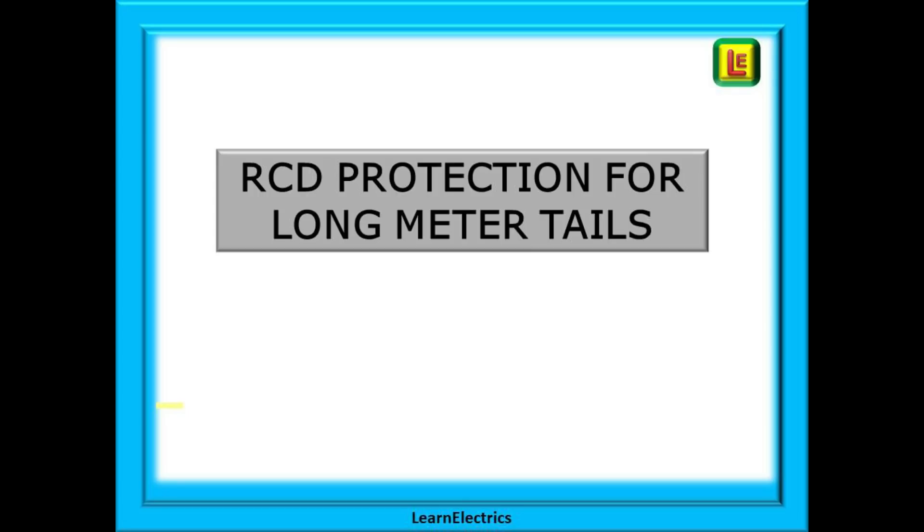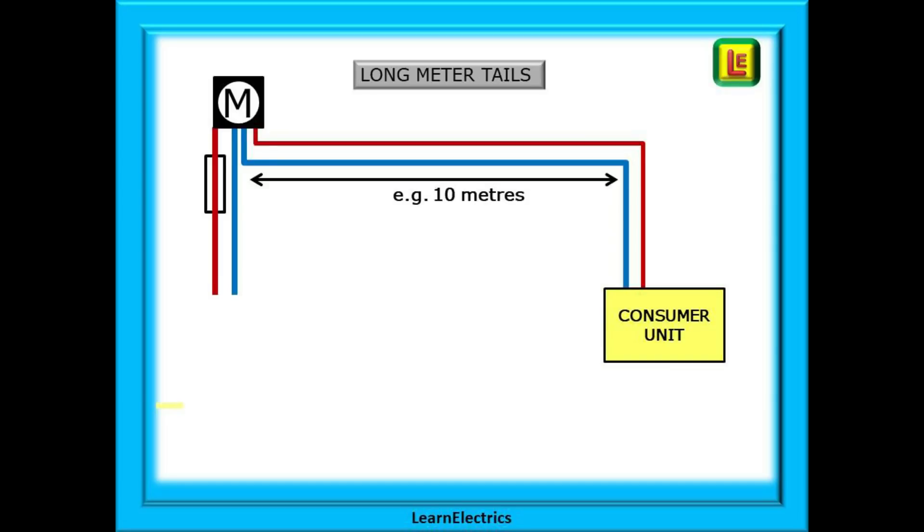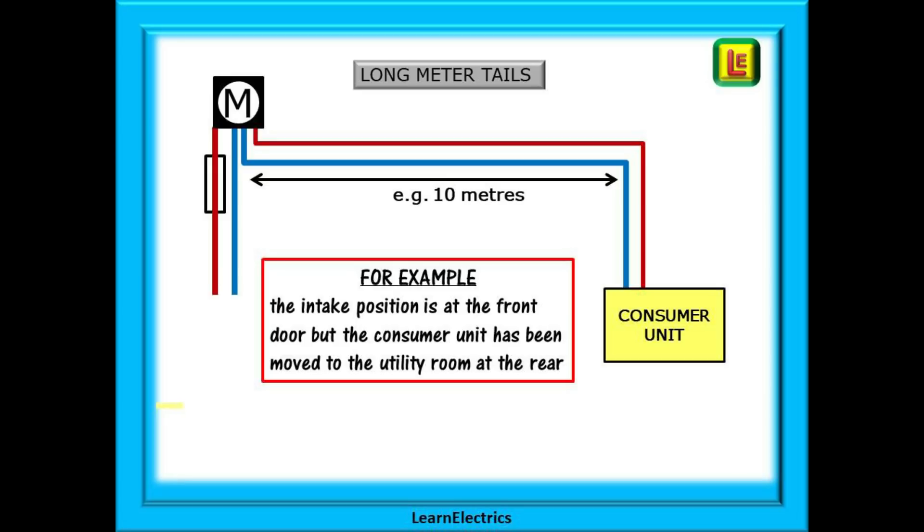And you may also come across properties with TT systems that have excessively long meter tails. How should you protect these? In this example the tails are over 10 meters in length. It could be that the intake position is at the front door but the consumer unit has been moved to the utility room at the rear of the property. What protection have these cables got, especially if they've been placed underground and then become damaged by digging? What is going to disconnect these cables within the required times? Because the main fuse will have the same problem. Unless the spade or digger bucket connects with both the line and neutral at the same time, there will not be enough current flowing through the soil to trip the main fuse.